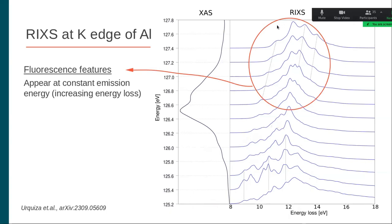On the other hand, we also observe fluorescence features that appear usually when you excite at energies much higher than the X-ray absorption threshold. In this case, the peaks appear at increasing energy loss, which means constant emission energy: you increase the absorption energy and keep the emission constant, so you increase the energy loss. These features are normally associated with X-ray emission or fluorescence because you have lost the coherence between absorption and emission — the absorption just provides a modulation of the intensity but does not change the shape of the spectrum.